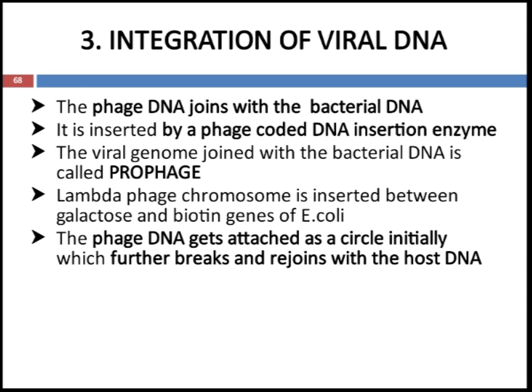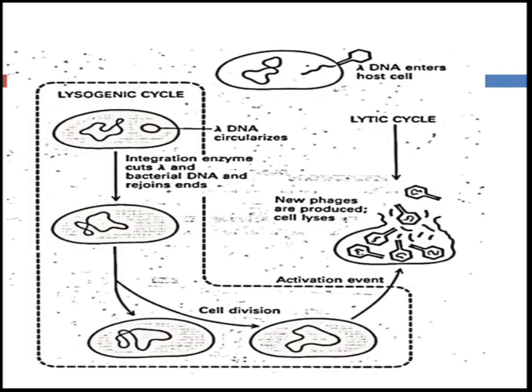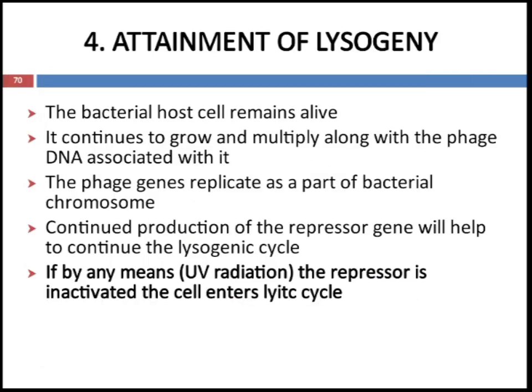The third stage is integration of viral DNA. The phage DNA joins with the bacterial DNA and is inserted by a phage-coded DNA insertion enzyme. The viral genome joined with bacterial DNA is called a prophage. The lambda phage chromosome is inserted between the galactose and biotin genes. The phage DNA first attaches as a circle, which then breaks and rejoins with the host DNA. A picture represents the lysogenic cycle where the circular DNA joins with the bacterial DNA and replicates, remaining in the lysogenic cycle until activation of the lytic cycle.